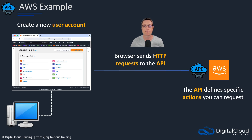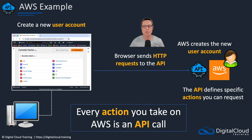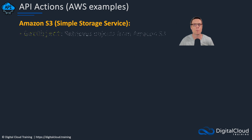It's a really great method of leveraging the internet and those standard protocols and web browsers to manage the cloud. Every single action that you take on AWS is actually an API call — whether you're creating databases, deleting Amazon S3 buckets, or updating a virtual server on EC2, everything is an API call. Let's have a look at some more examples.